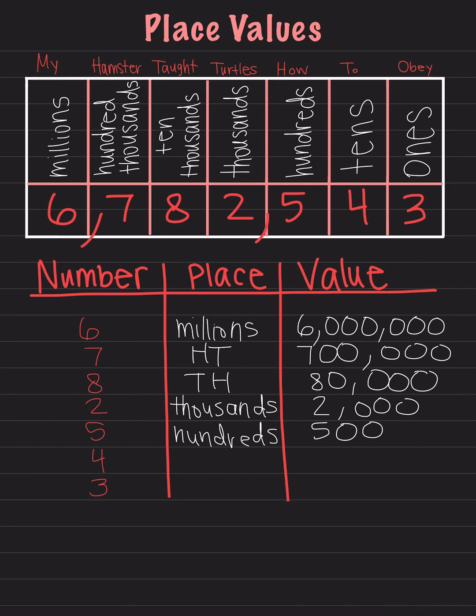The 4 is in the tens place — I will write tens. The value of the 4 is 4, and there's only one number left after that. I'll replace that with a zero, and the value is 40.